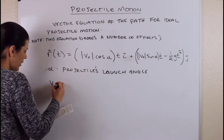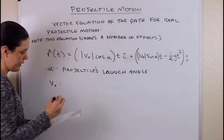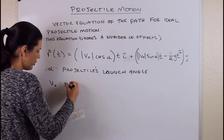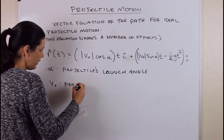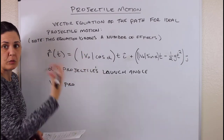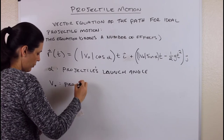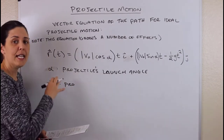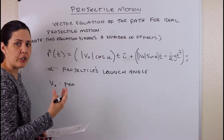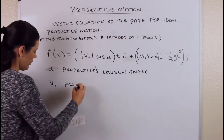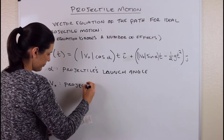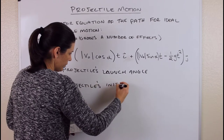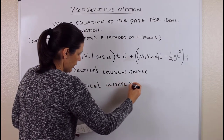Then v naught: v is velocity, so v naught is just the projectile's initial speed. When you take the absolute value, that's when it becomes the speed. If it has a negative, it's just indicating direction. So that's the projectile's initial speed.